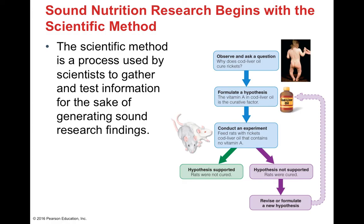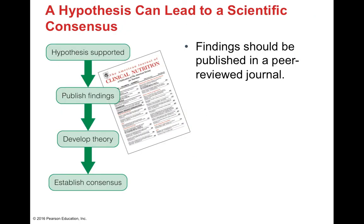If you want to believe the findings of a supplement company, you need to make sure the findings are published in a peer-reviewed journal. Once a hypothesis is supported and published, everyone gets to try as hard as possible to debunk the theory. If they're unable to disprove it, we can start to establish scientific consensus. To reach consensus, you have to have solid scientific data — and scientists use different types of studies to test hypotheses, generally in a laboratory setting, sometimes using lab animals.